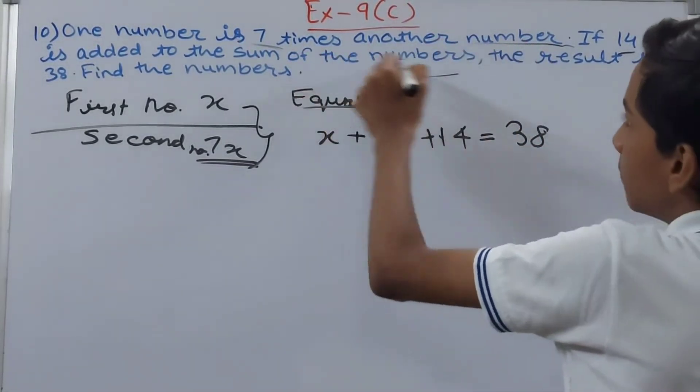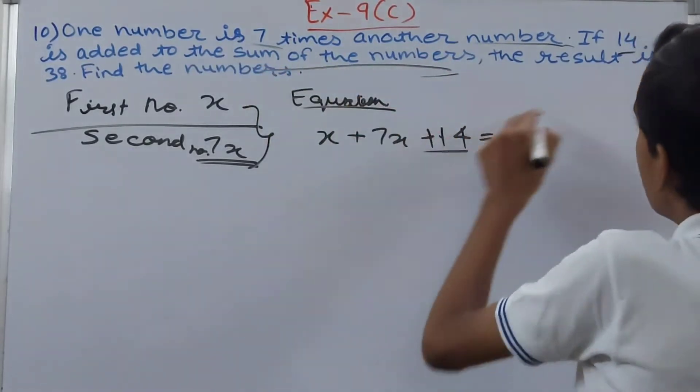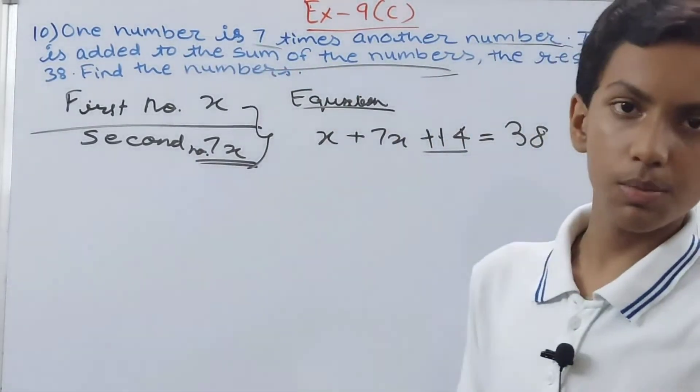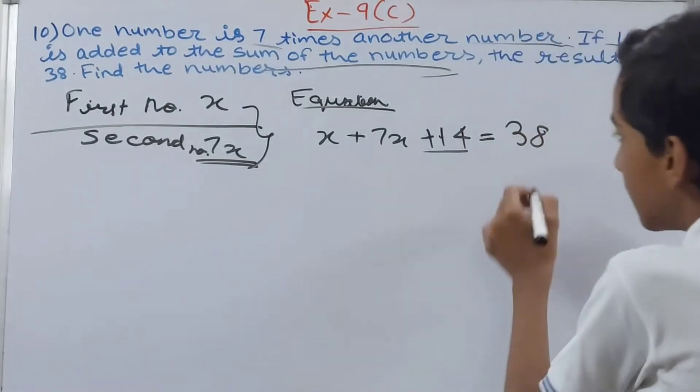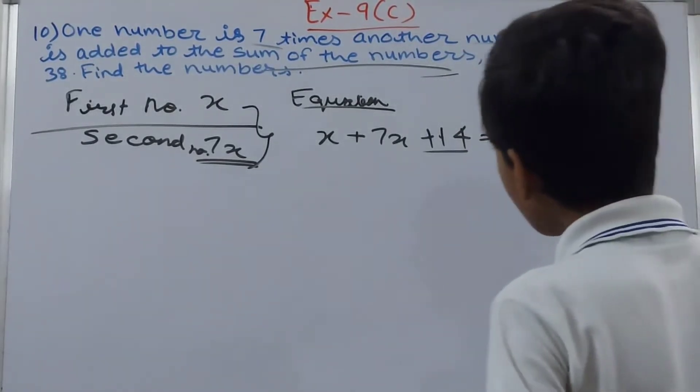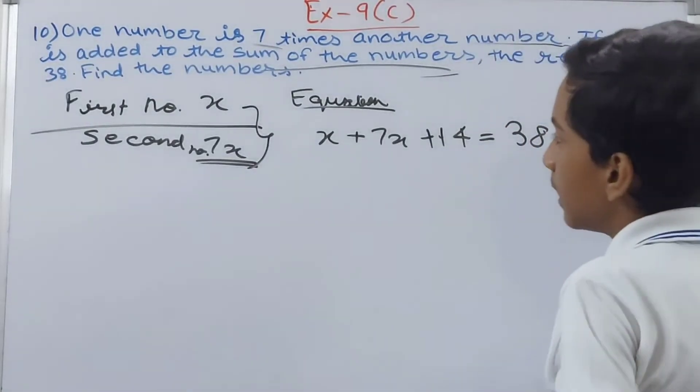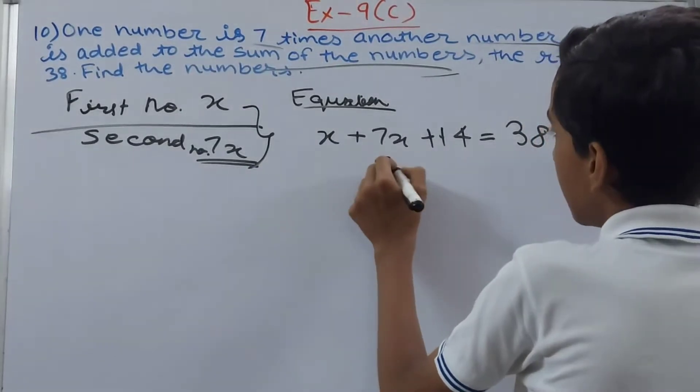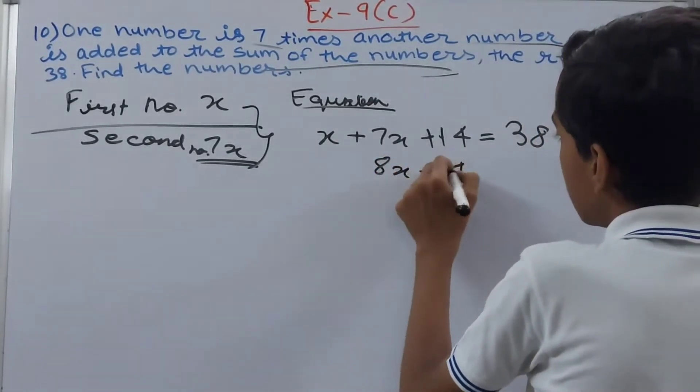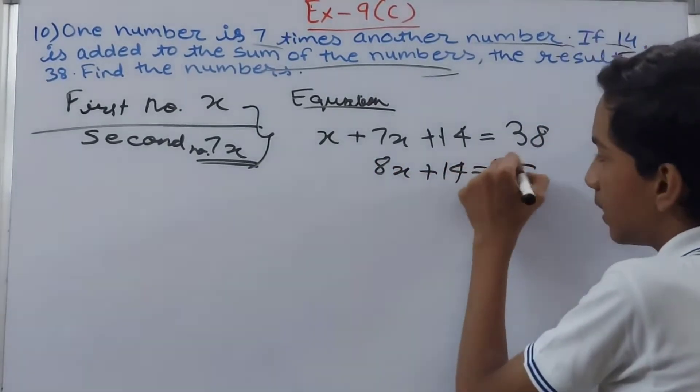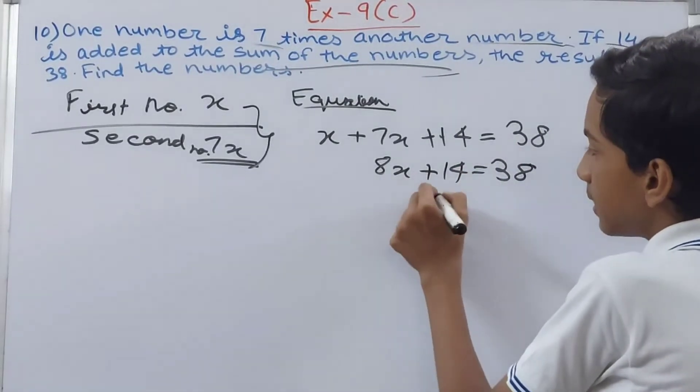This is it: it is added to the sum of the numbers, then we get 38. So plus 14. Now this becomes 8x plus 14 is equal to 38. 8x is equal to 38 minus 14.